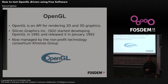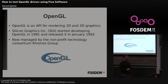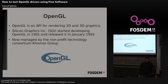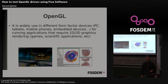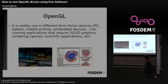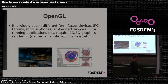But let's start from the beginning. OpenGL is an API for rendering 2D and 3D graphics. It was originally designed by Silicon Graphics, but nowadays is managed by a nonprofit technology consortium called the Khronos Group. It's widely used in different form-factor devices — PCs, tablets, mobile phones, embedded devices — for running applications that need 2D and 3D graphics rendering, most of the time because they need hardware acceleration. For example, games, scientific applications, et cetera.